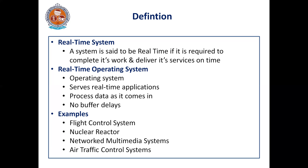Such task implementation can be done in the case of real-time operating system. All the limitations in the previous architectures can be overcome in this architecture. This architecture is mainly used for complex embedded system applications. In the RTOS architecture, you can concentrate on urgent operations and give process time immediately once they have been triggered, giving importance to urgent operations.